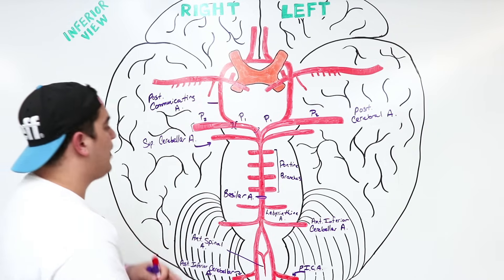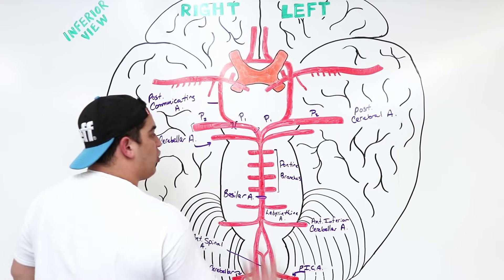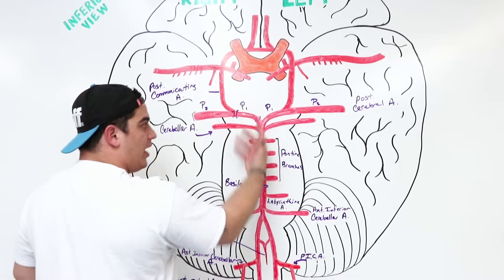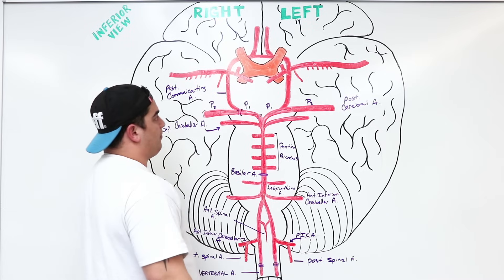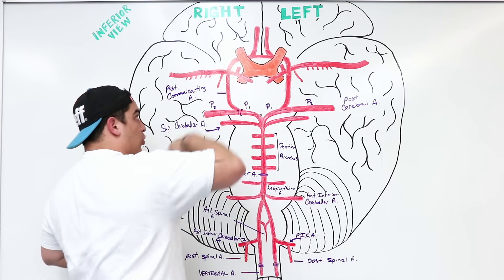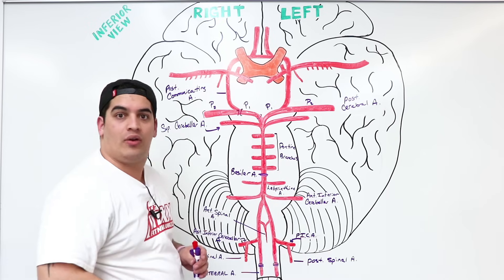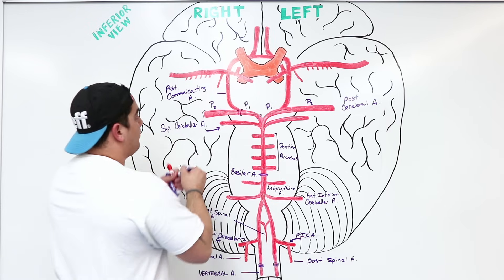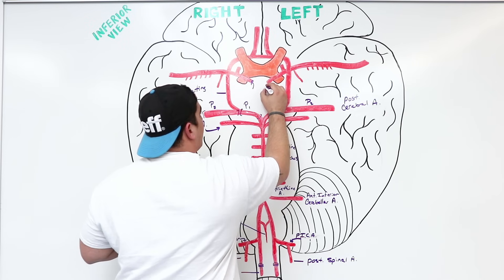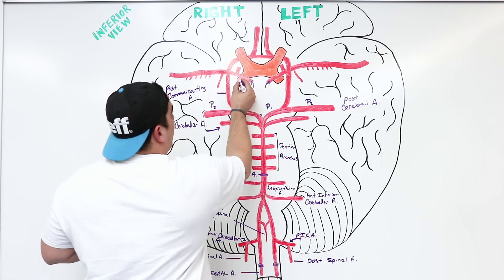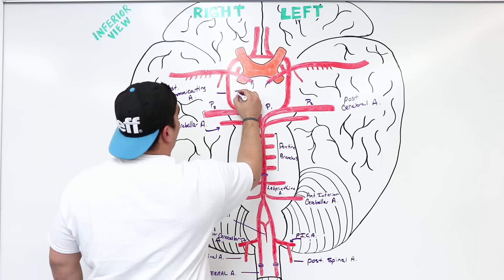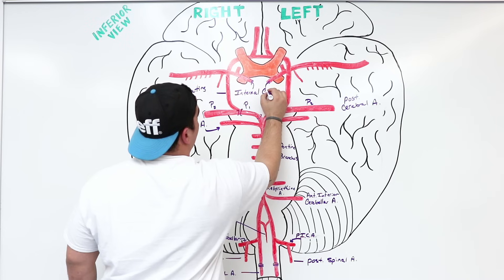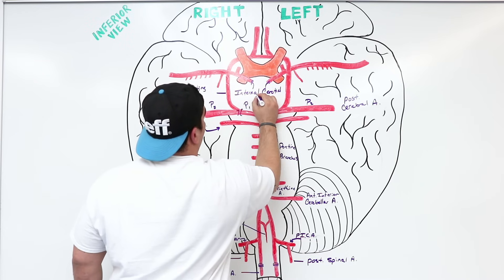The posterior part of the Circle of Willis is formed by the vertebrobasilar system, which contributes about 20% of blood flow. The remaining 80% comes through the internal carotid arteries — the right and left internal carotid arteries — which are the dominant feeders of the Circle of Willis.